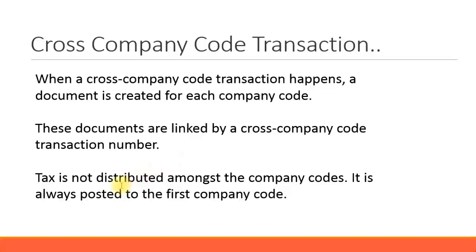If the tax amount is not distributed among the company codes, it is always posted to the first company code. This means if company code A buys something on behalf of company code B, then company code A will pay the taxes, not company code B.